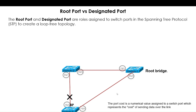We have three switches: Switch 1, Switch 2, and Switch 3. On all these switches we will have physical ports or interfaces, and those ports will be assigned some roles. Those roles are root ports and designated ports, and they are part of a protocol called Spanning Tree Protocol.